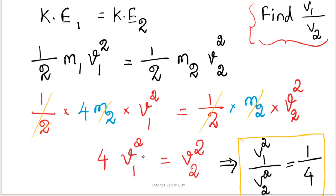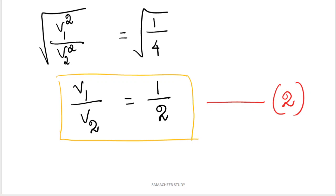Now, what is V1 by V2? Rearranging: V1 squared divided by V2 squared equals 1 by 4. Taking the square root on both sides, V1 by V2 equals 1 by 2.